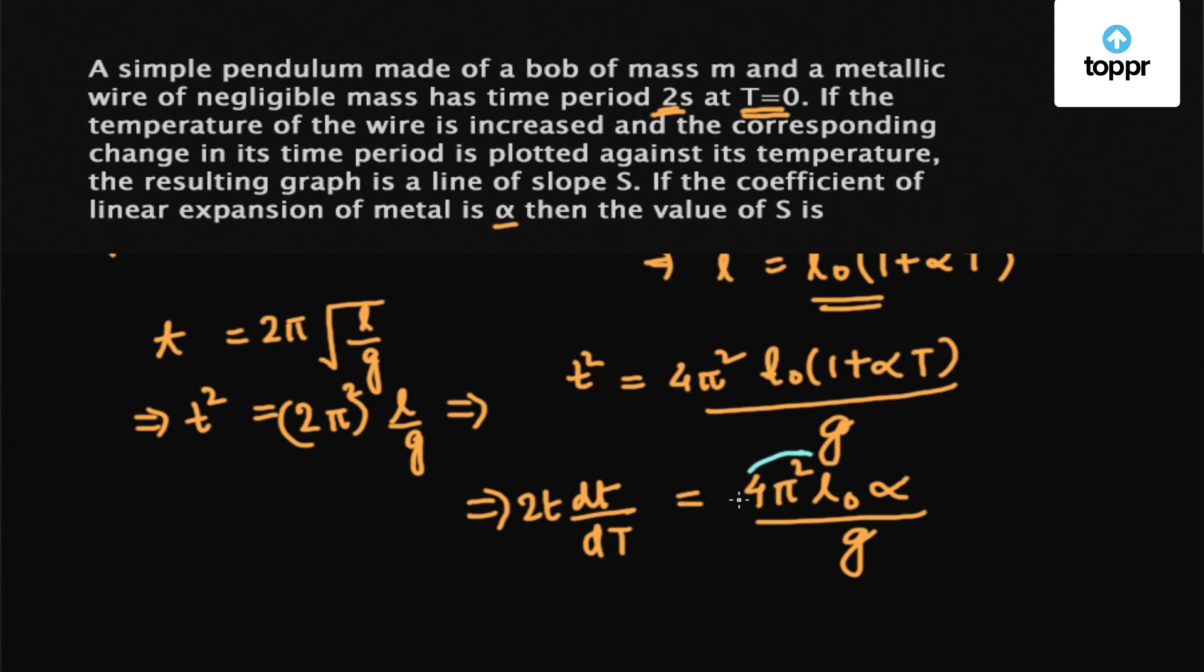Now 4π²L₀/g is nothing but t², so we have dt/dT = t²α/(2t).